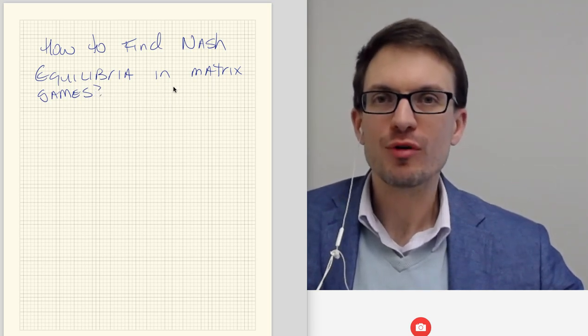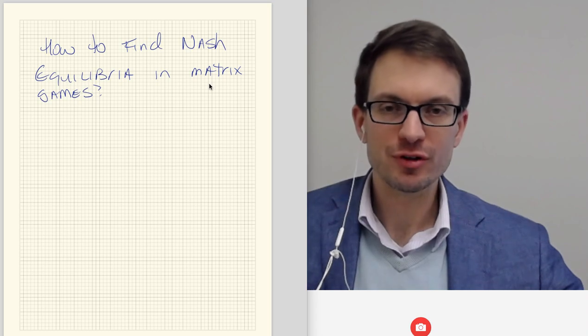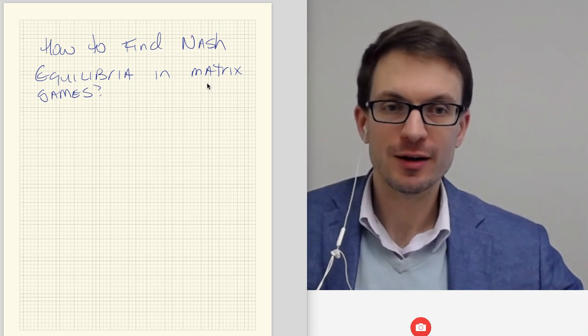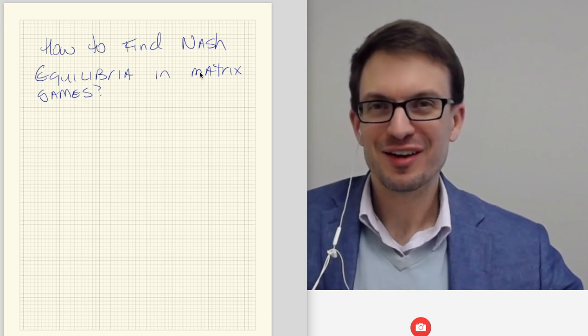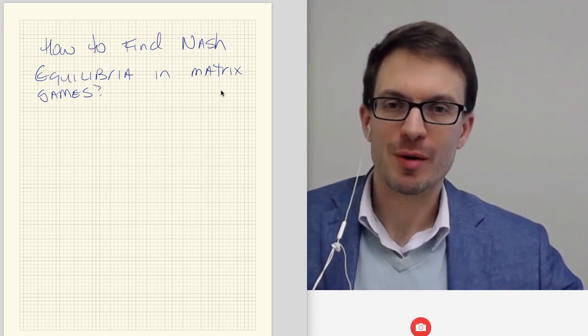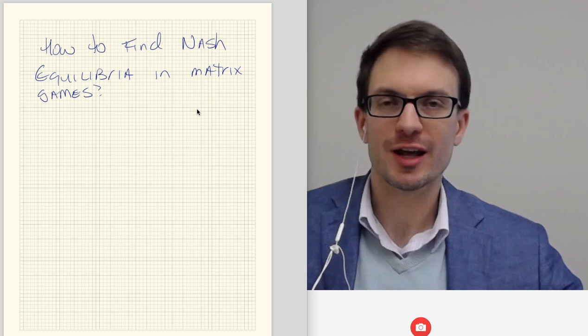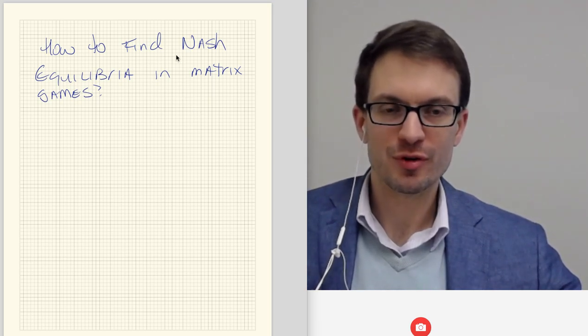Remember, if we have a game in normal form, we can represent it using a matrix. We wouldn't have to, but we could, depending on the particular circumstances. Like if we have two players, we have a finite set of strategies, and we can often represent the game in matrix form. So you see a lot of matrix games in economics courses.